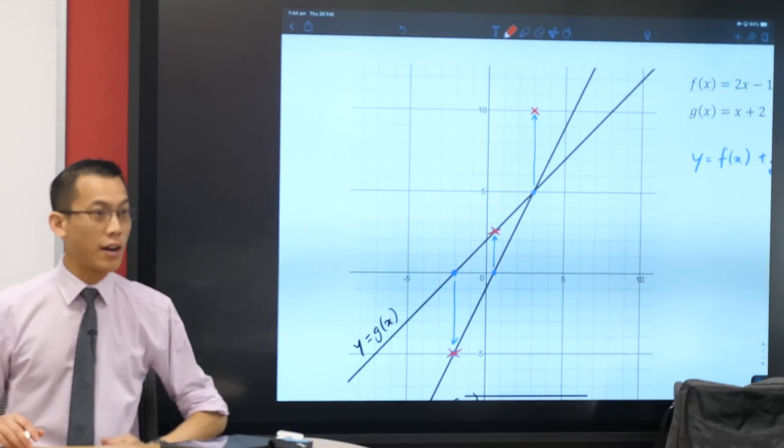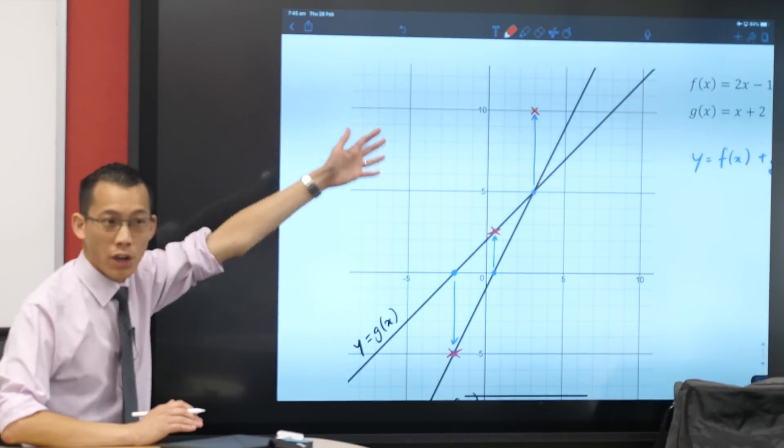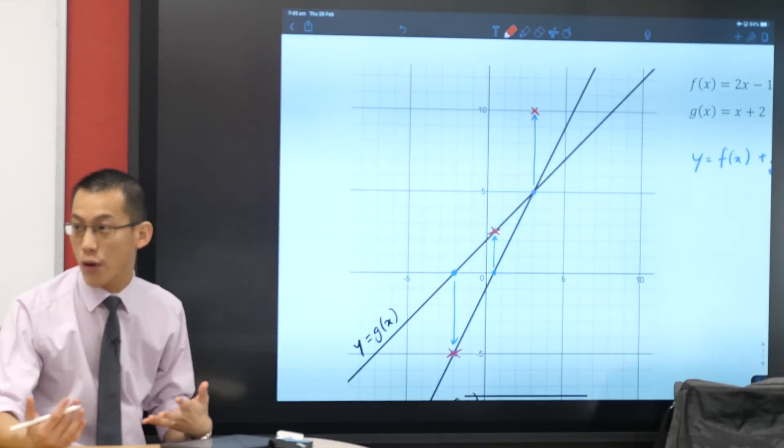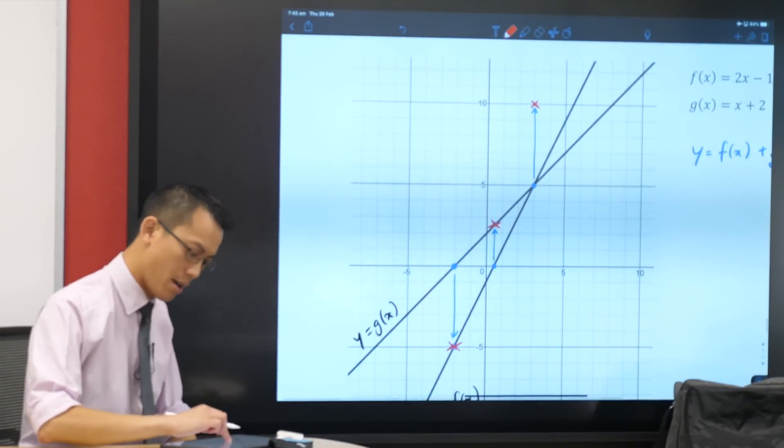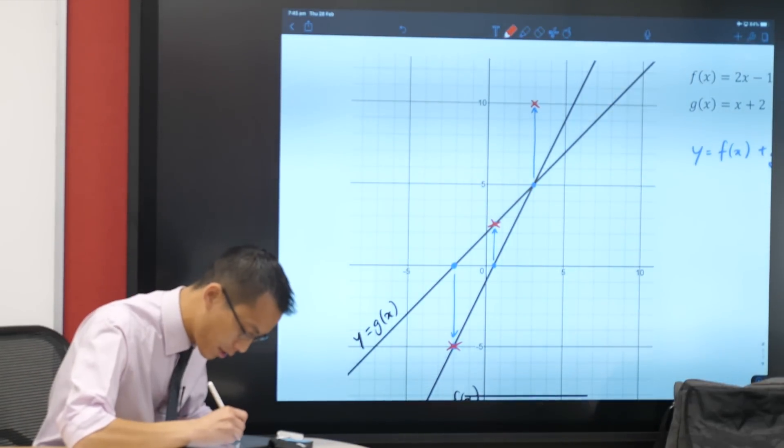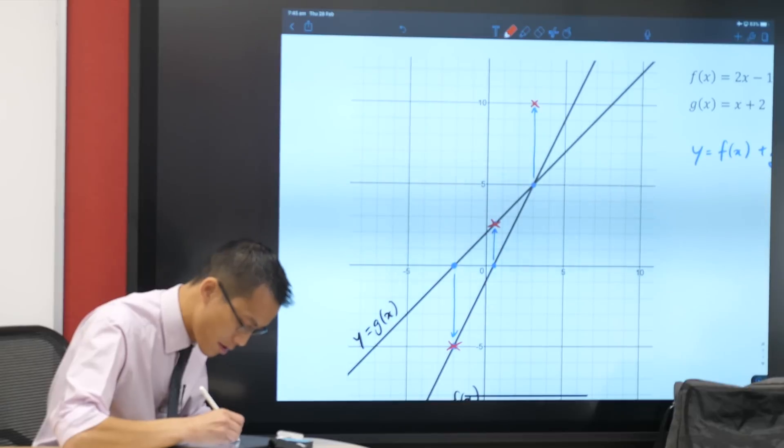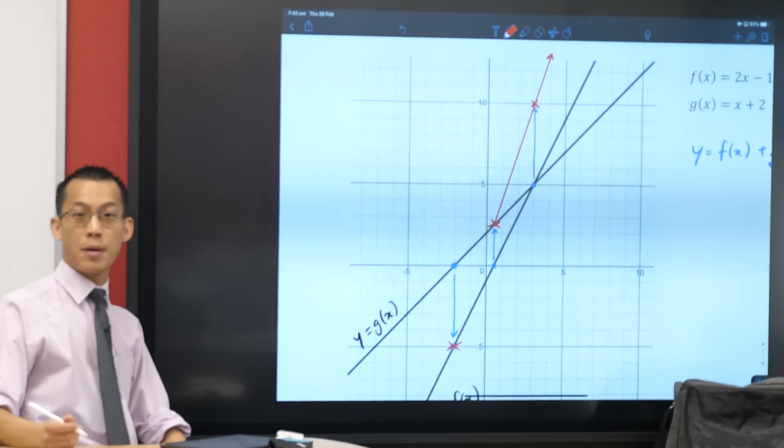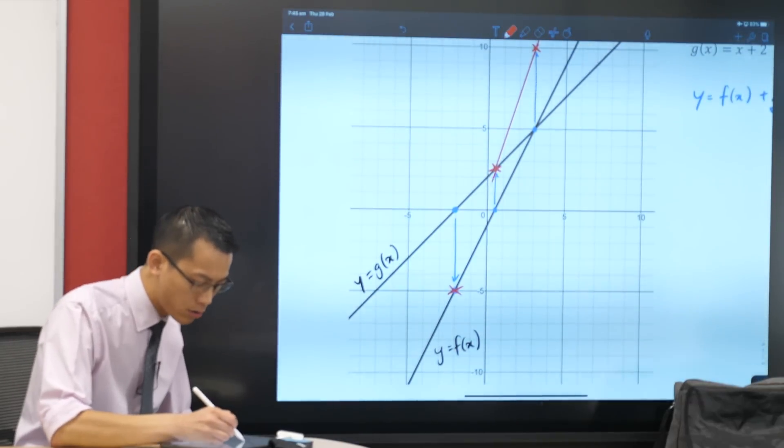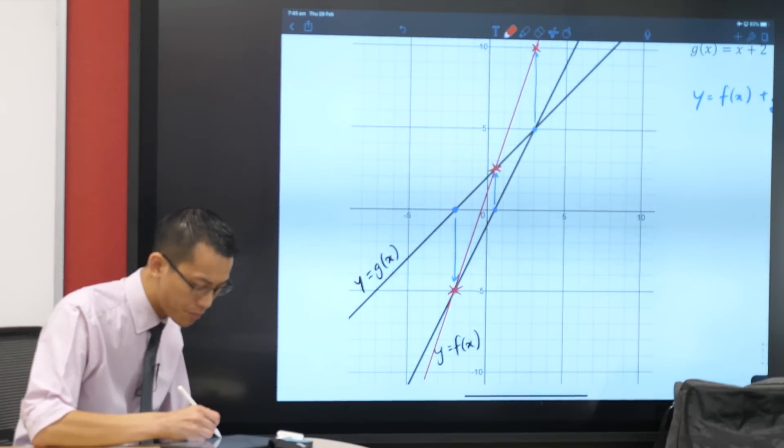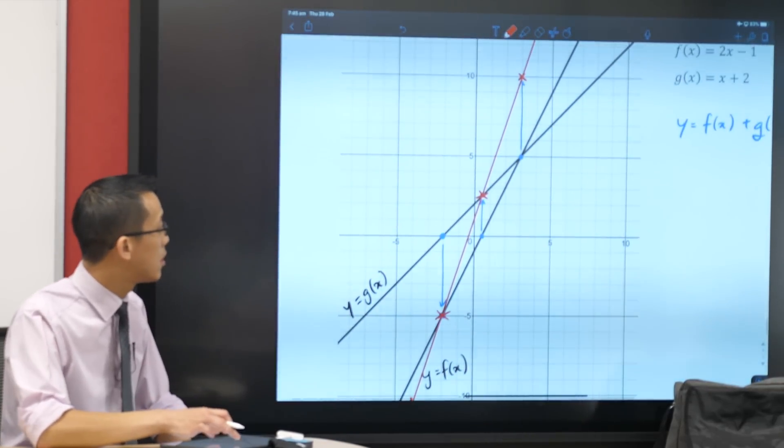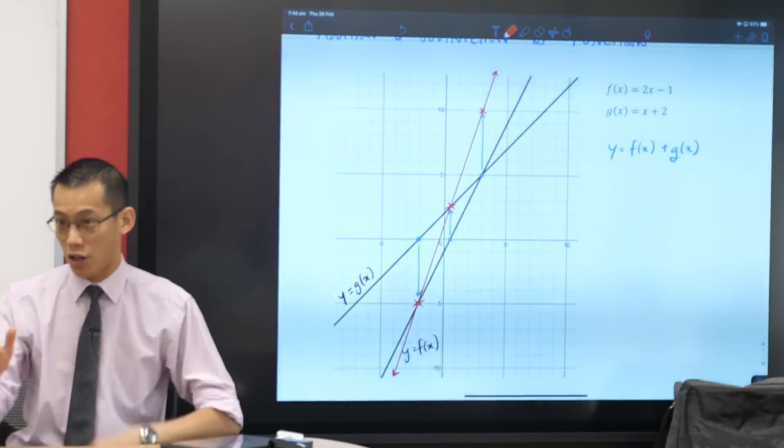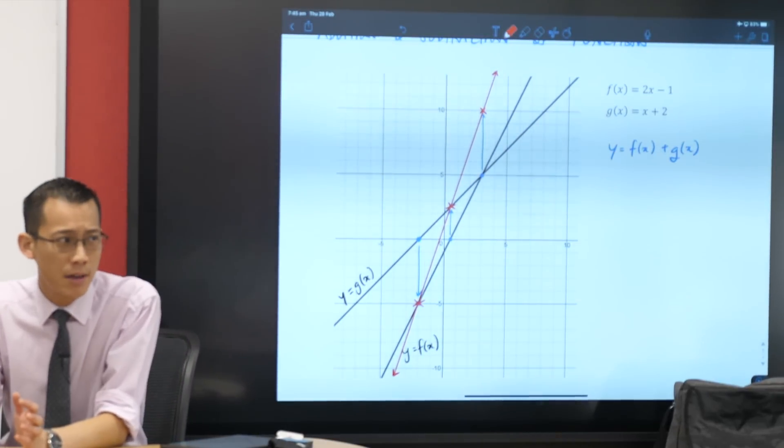Here's what I'm going to do. I think I've got enough information now to draw what's going to go through all of these. You add one straight line to another, you're going to get another straight line. Let's see if I can draw all the way through this. I think I'm going to get something like that. Do you see my red line? It goes through all three of the crosses that we put in. Are you tracking with me so far?